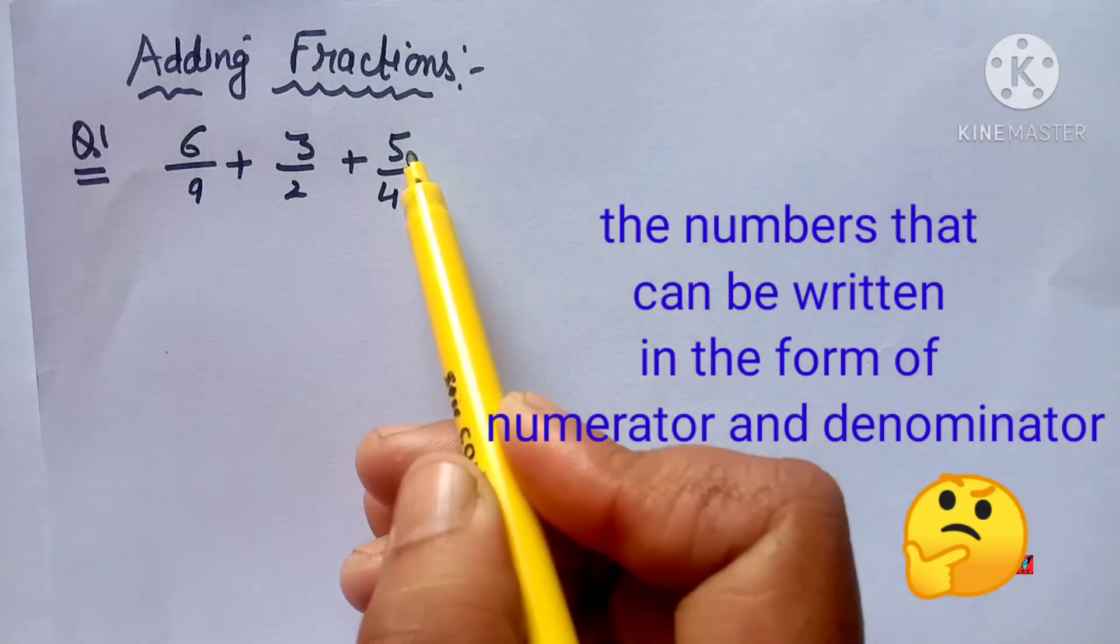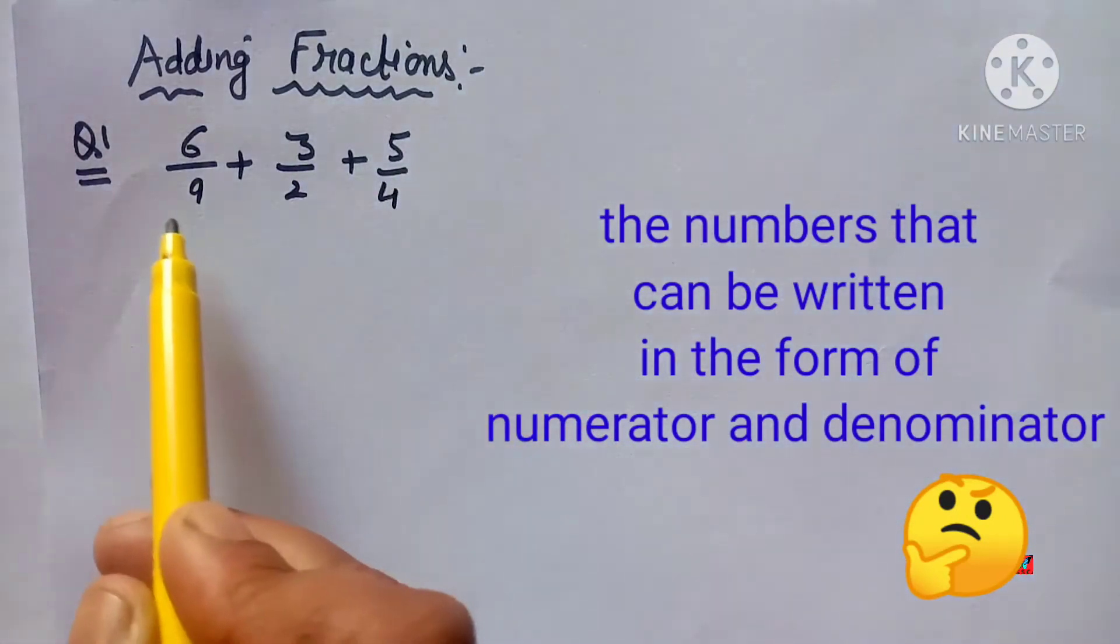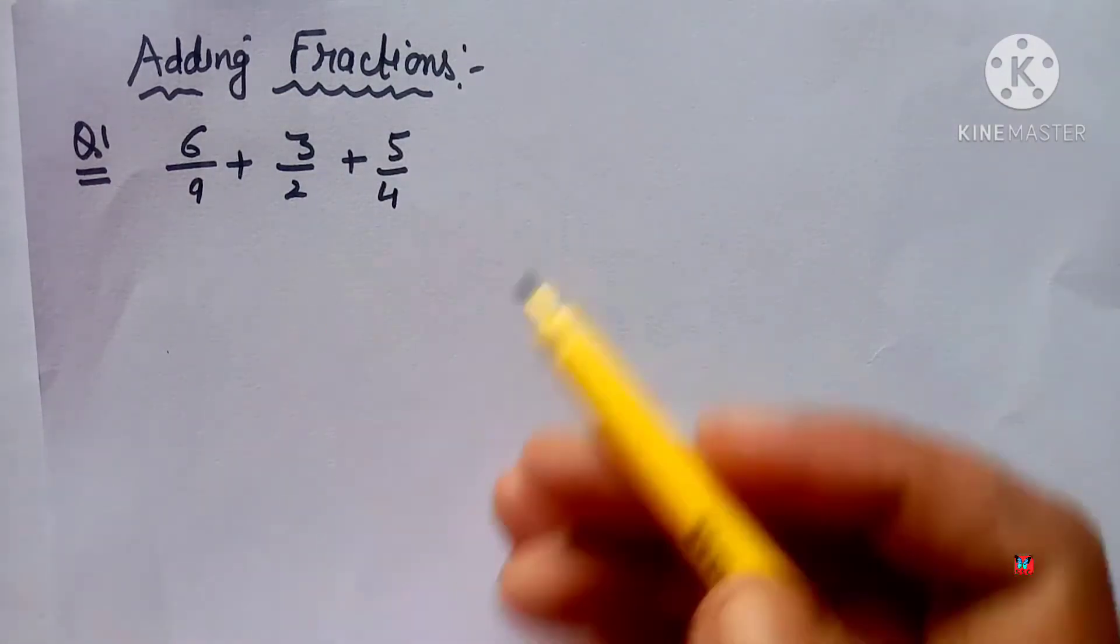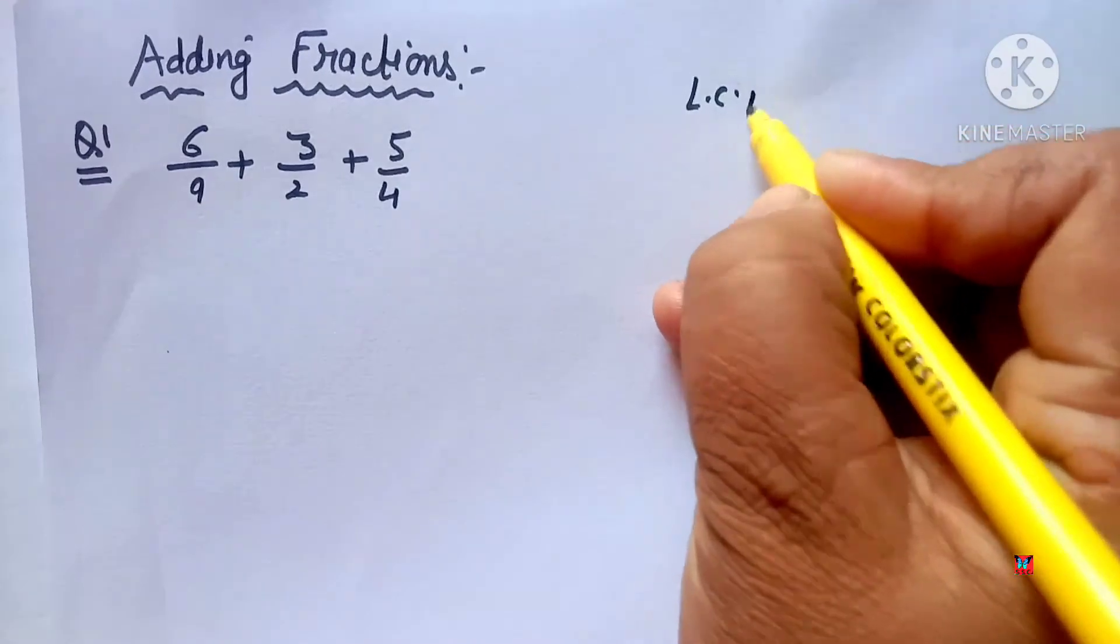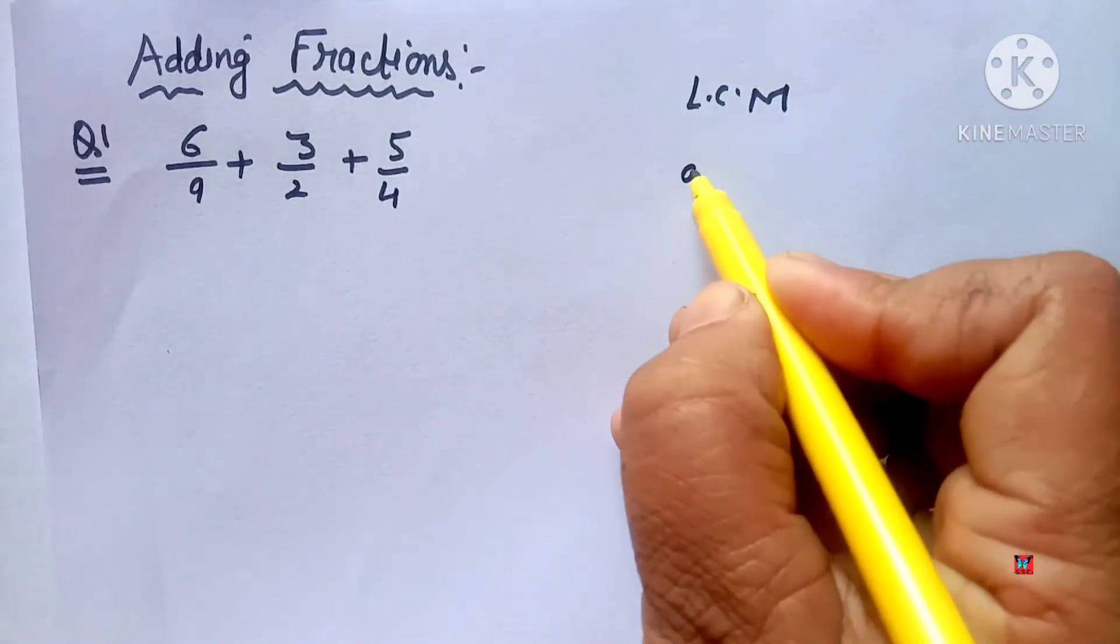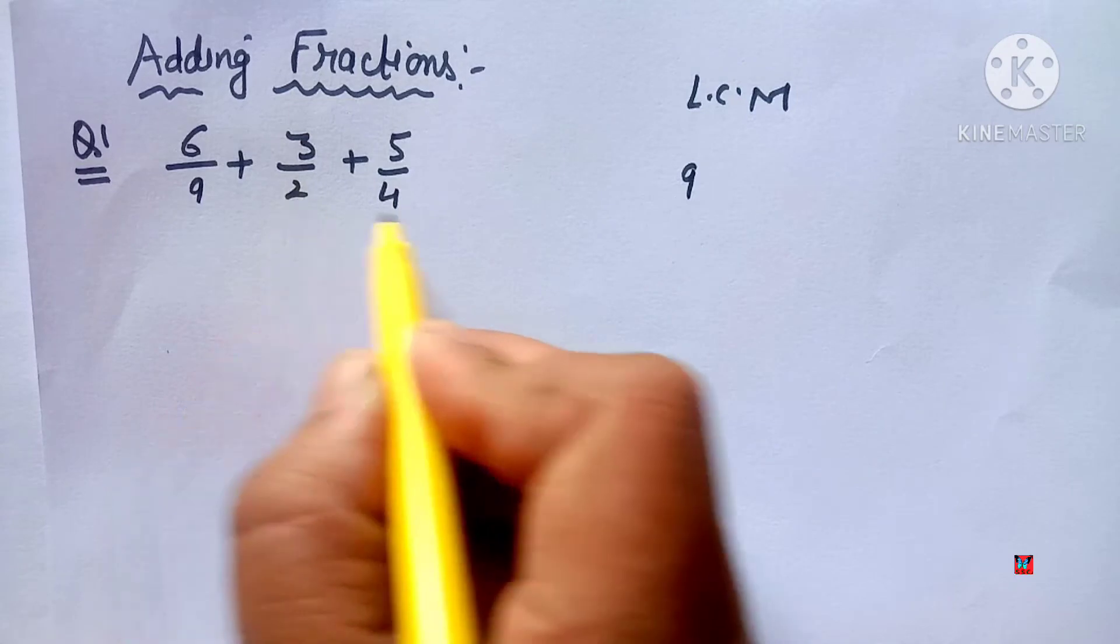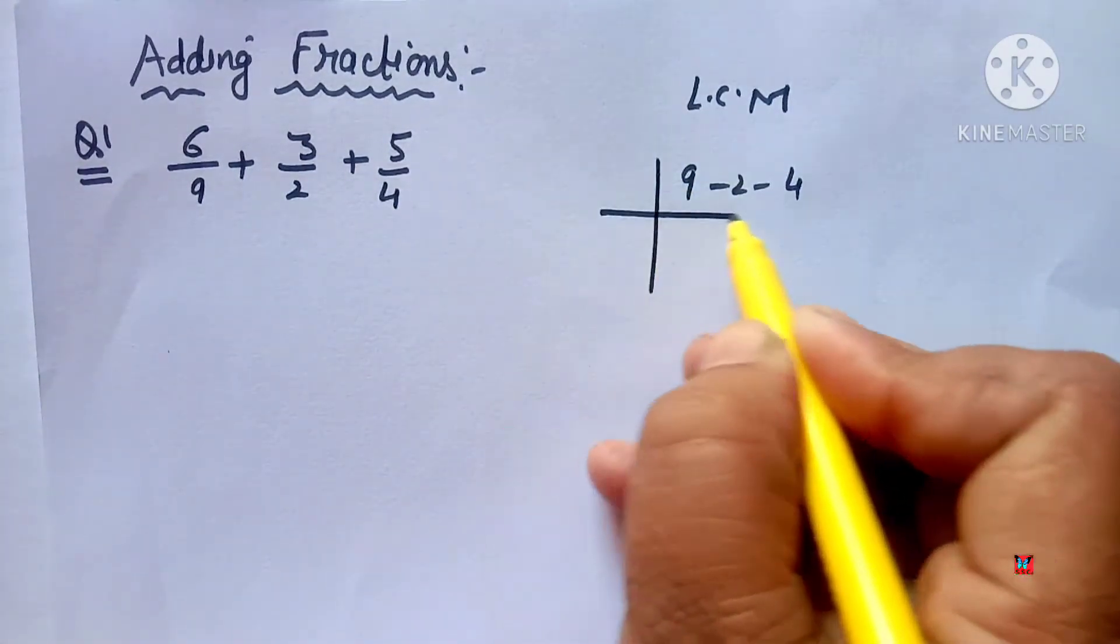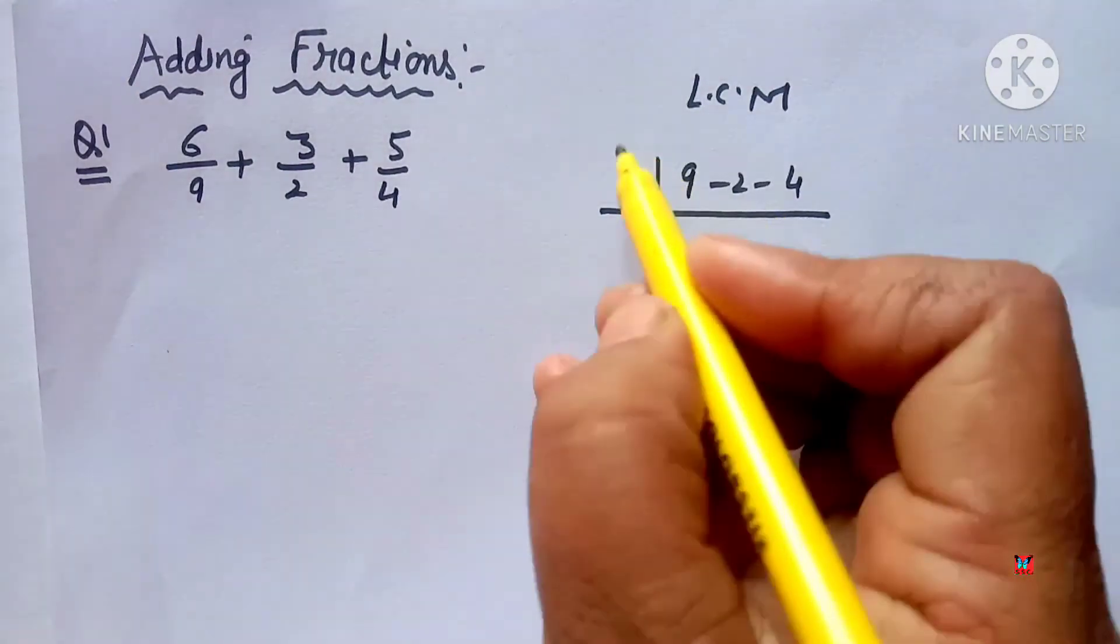Examples: 5 numerator 4 denominator. Question 1: 6/9 + 3/2 + 5/4. For denominators 9, 2 and 4, we need to find LCM. First divide: 9 divide 2, 2 divide 2 gives 1, and 4 divided by 2 gives 2.